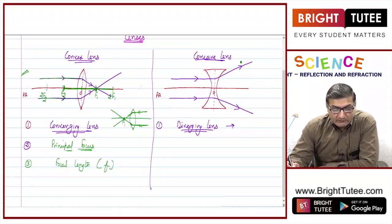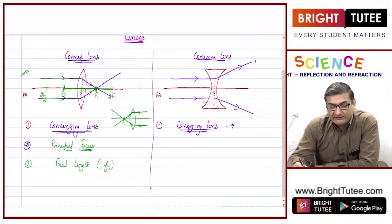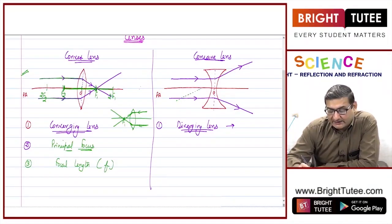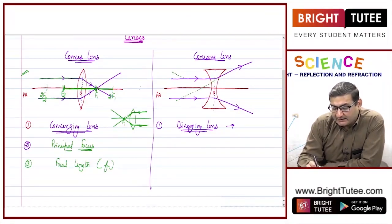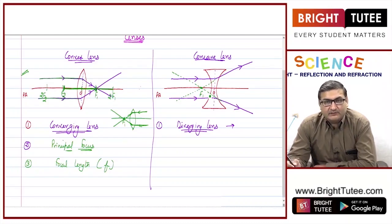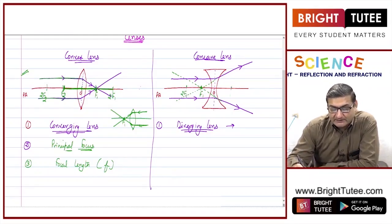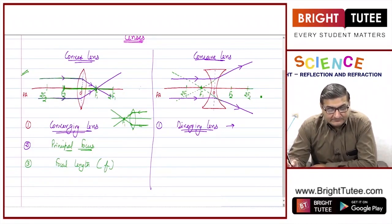In the case of a concave lens, the light rays are diverging, so they do not actually meet anywhere. What we do is extend these light rays with a dotted line, and the point where these dotted lines appear to meet — not actually, but apparently — is termed as the principal focus of the concave lens. If this is the principal focus F1, then we mark 2F1 at double this distance, and similarly mark F2 and 2F2 on the other side.